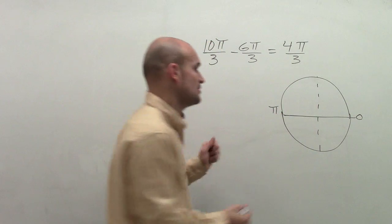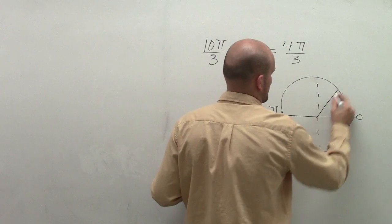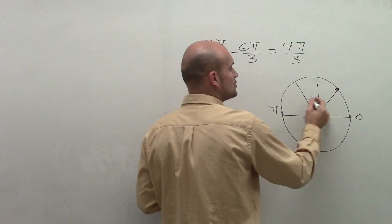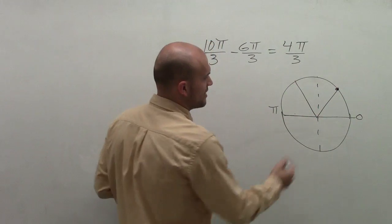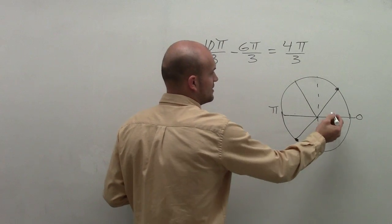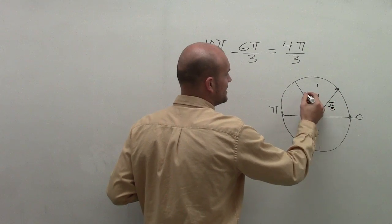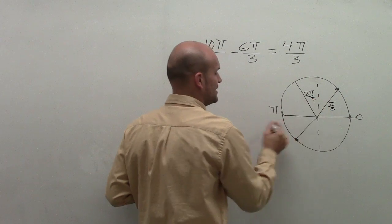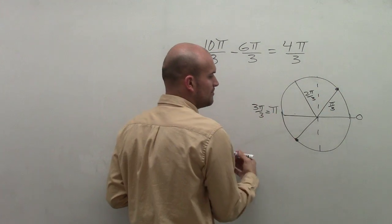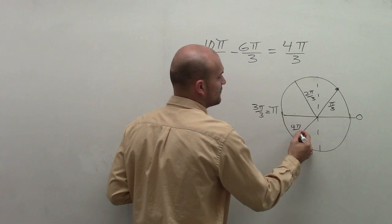Now, if I was to break this up into thirds, we could say this angle would be π/3, 2π/3, and then 3π/3. So 4π/3 is going to be an angle right down here. So this is π/3, 2π/3, this is going to be 3π/3 which equals π, and then over here would be 4π/3.